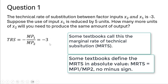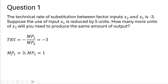That means that the ratio of the marginal product of input 1 to input 2 is 3. So we can define the marginal product of input 1 as 3 and the marginal product of input 2 as 1, maintaining this 3 to 1 ratio.